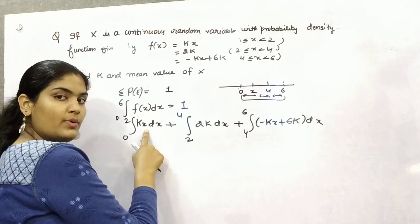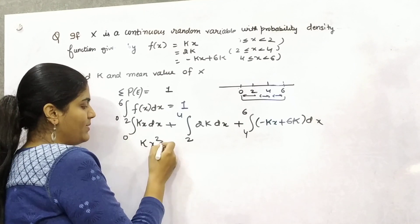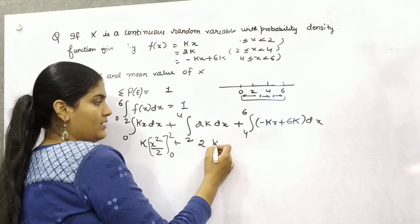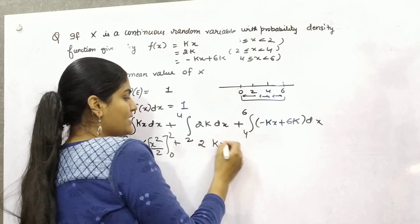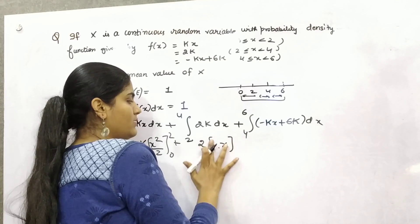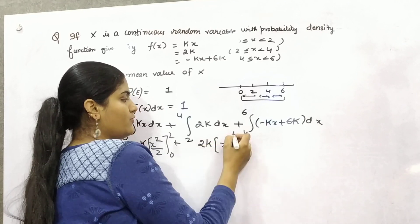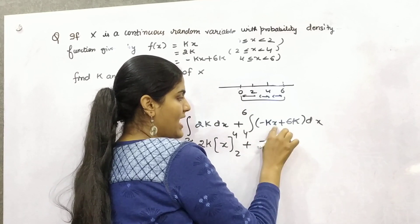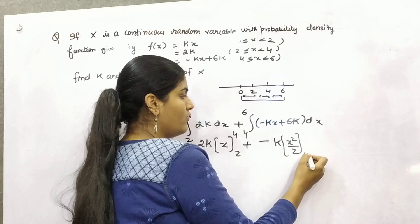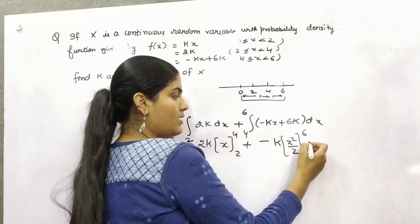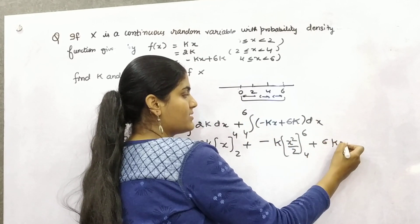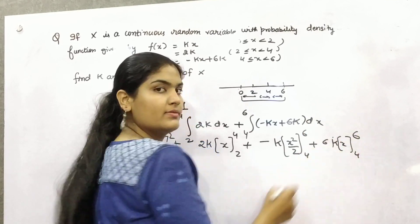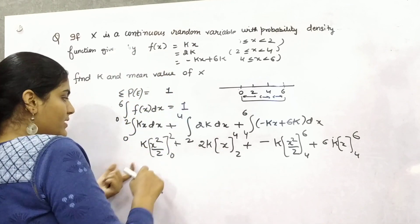Integration of x is x squared by 2, limit 0 to 2. Integration of dx is x, k is constant, limit 2 to 4. This will be minus kx squared by 2 plus 6kx, limit 4 to 6.